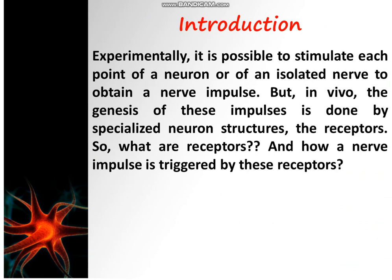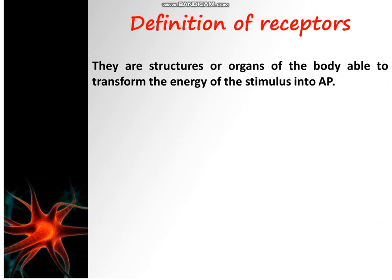Experimentally, it is possible to stimulate each point of a neuron or of an isolated nerve to obtain a nerve impulse, but in vivo the genesis of these impulses is done by specialized neuron structures: the receptors. Receptors are structures or organs of the body able to transform the energy of the stimulus into action potential.